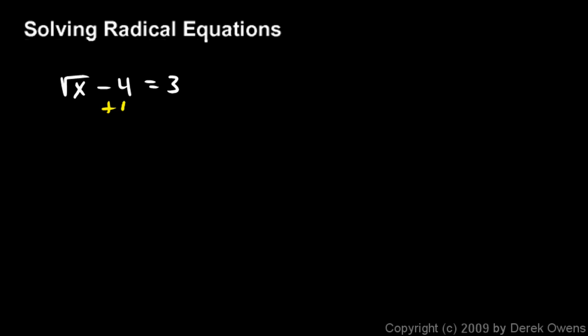So, a pretty obvious first step here is to add 4 to each side. And the negative 4 and the positive 4 cancel out. And that leaves us with the square root of x on the left, and that equals 7 on the right.